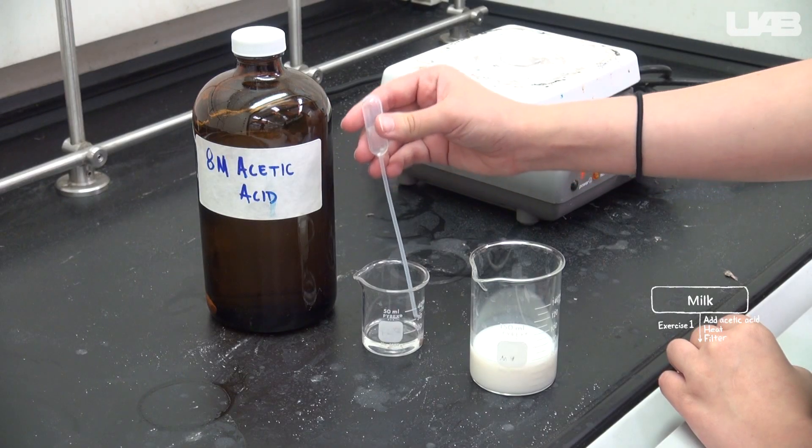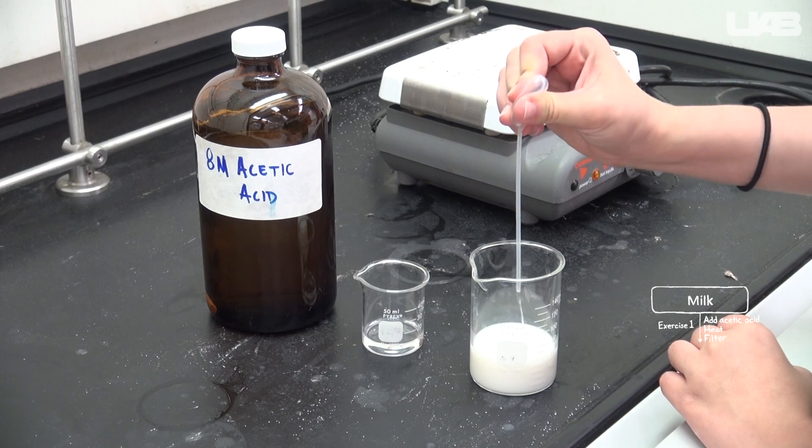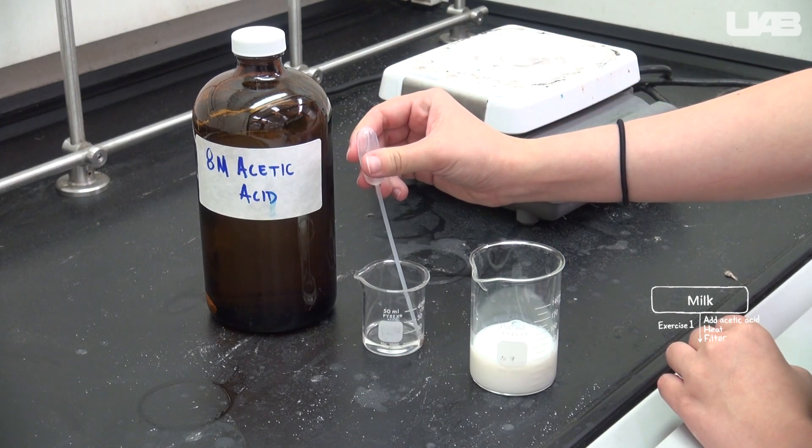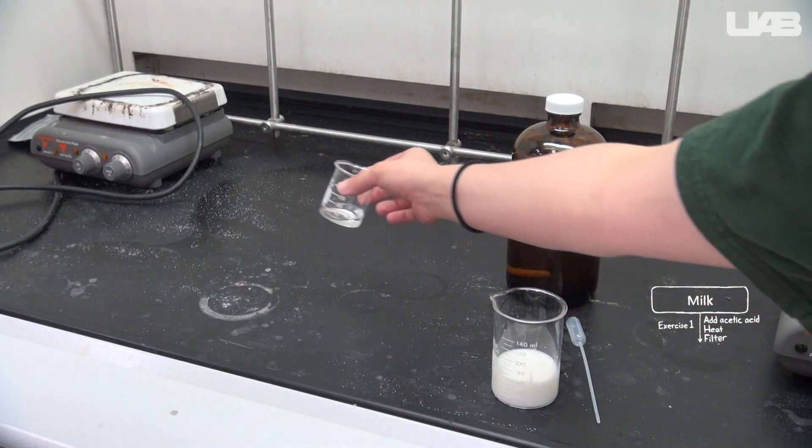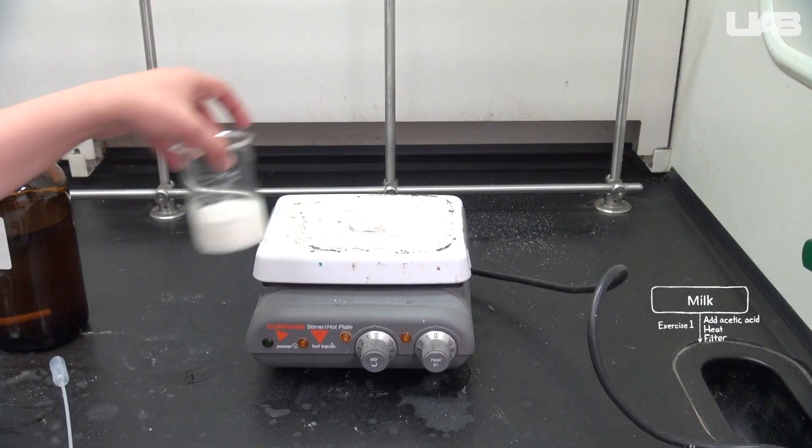Move to the hood and add one milliliter of eight molar acetic acid to the beaker. Make sure you pour the acid into a separate container before touching it with the pipette. You and other groups can share this container. You will need about two pipette holes.